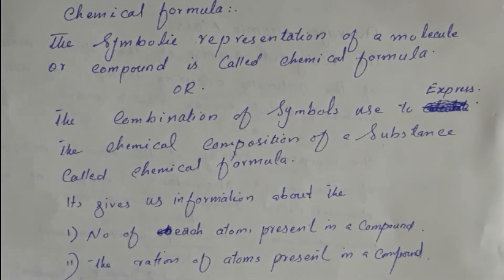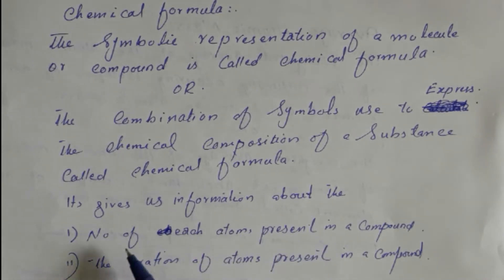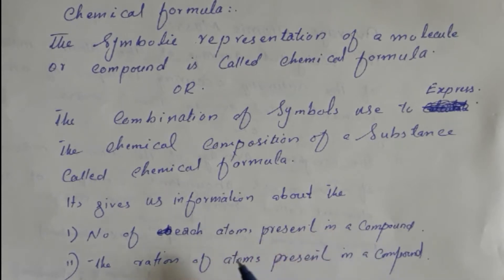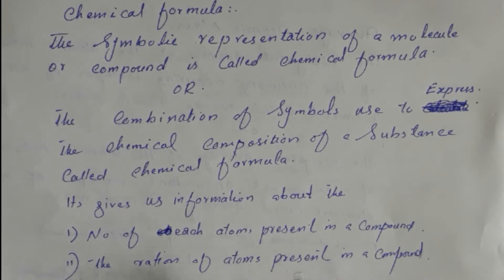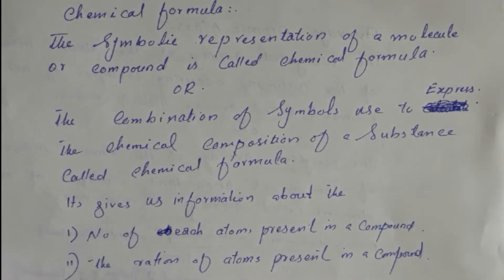A chemical formula gives us information about the number of each atom present in a molecule. It also gives information about the ratio of atoms present in a compound — that is, the ratio between the atoms of a molecule.